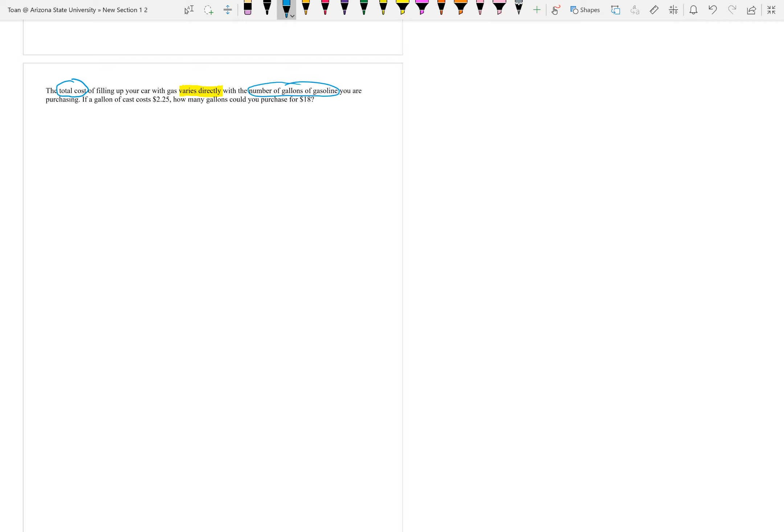So let's give them variables. They can be any variables you want. Total cost, I'll call c. Number of gallons, I'll call g. You can use x and y's, whatever you want. So since they used that trigger word and I used my variables, I can set up my equation in the order that they gave it to me. C came first. They used the word varies directly, so equals k. And then the number of gallons came second.